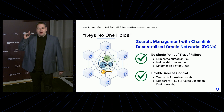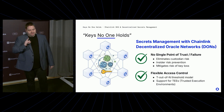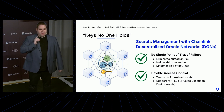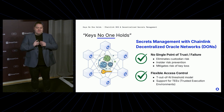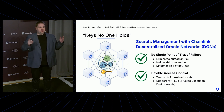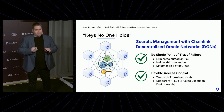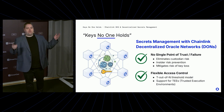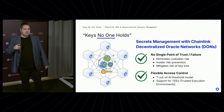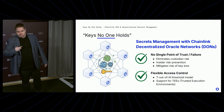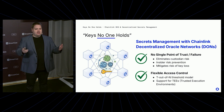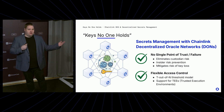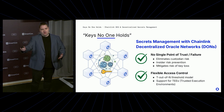Let me zoom in on the title of this talk again: keys no one holds. By 'no one,' I want to emphasize that no single entity should control the key. Rather, as depicted in this picture, the control over cryptographic keys is safeguarded by a system — a network of nodes, here depicted as a Chainlink decentralized oracle network, a DON. By using a decentralized way to control and manage keys, we avoid the single points of failure associated with unauthorized access as well as key loss.